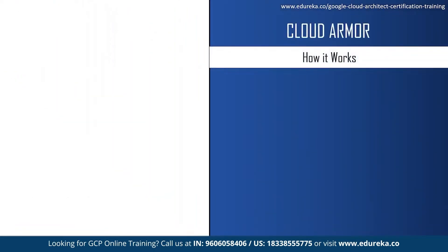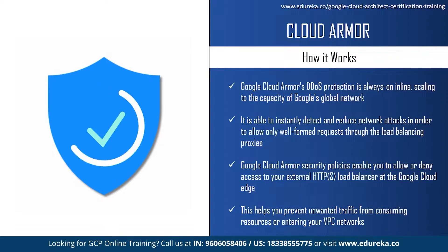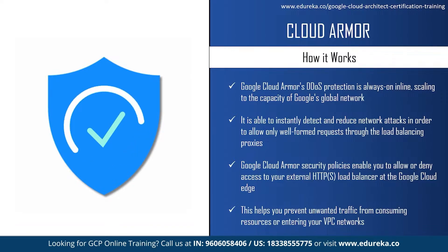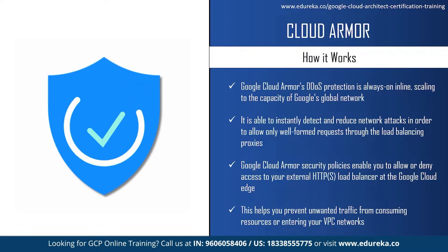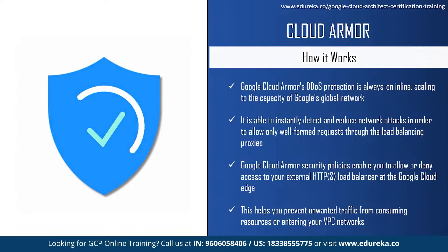Google Cloud Armor's DDoS protection is always on, inline scaling to the capacity of Google's global network. It is able to instantly detect and mitigate network attacks, allowing only well-formed requests through the load balancing proxies. With Google Cloud Armor security policies, you can allow or deny access to your external HTTPS load balancer at the Google Cloud Edge, as close as possible to the source of incoming traffic, helping prevent unwanted traffic from consuming resources or entering your VPC network.